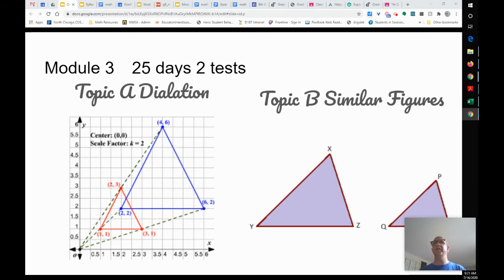Module three is 25 days and two tests. We're going to start talking about dilation. So two figures that are dilated have a scale factor. They're either bigger or smaller, but they're exactly the same shape. This is called a similar figure. So that's topic B. So how do we determine if shapes are similar?